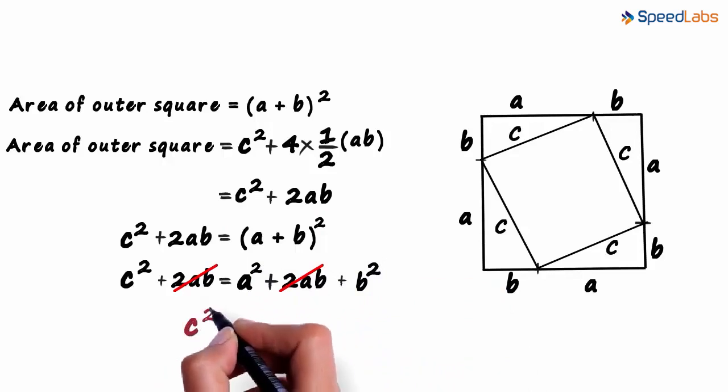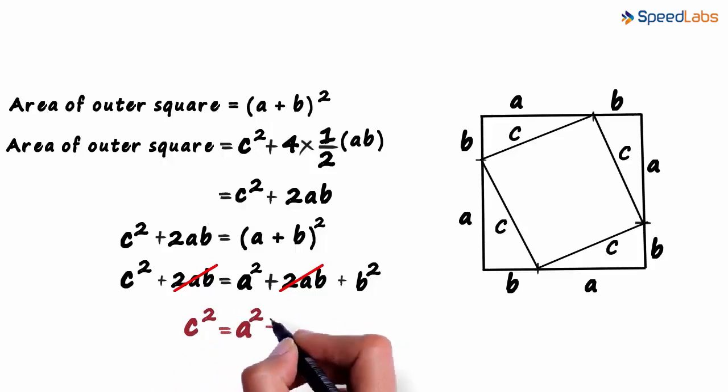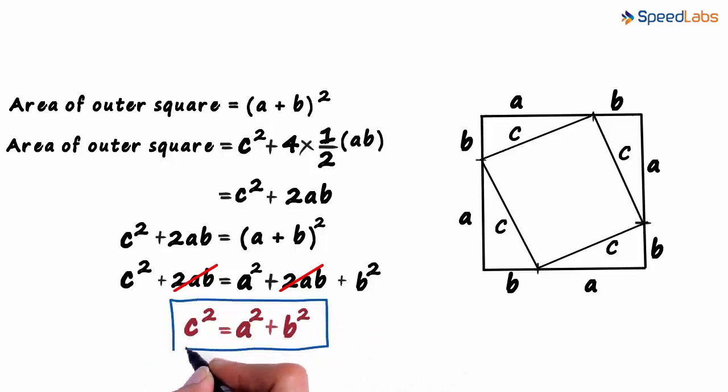we get c² = a² + b². This is the Pythagorean theorem.